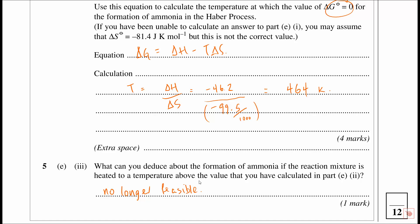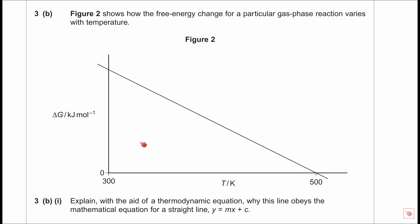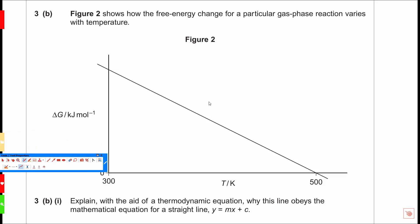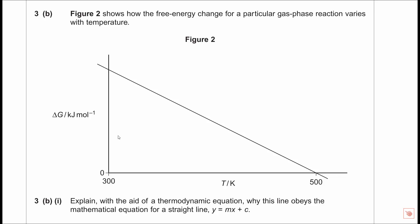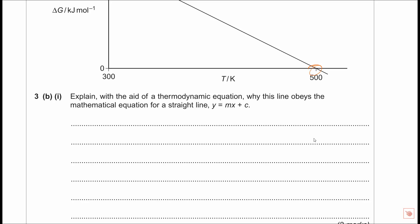Now looking at the June 2013 question — it's a little bit different and can take you by surprise. There's a graph showing how the free energy change for a gas phase reaction varies with temperature. As temperature increases, the delta G value decreases. There's a key point marked at 500 Kelvin, with the graph starting at 300.